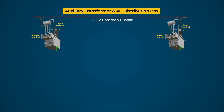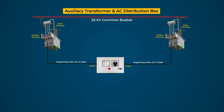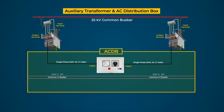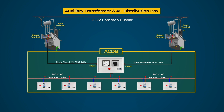The output of Auxiliary Transformers are connected with double-pole switch fuse units of appropriate rating to the ACDB, in such a manner that only one supply is fed to the copper bus bar of the ACDB through a changeover switch. This supply is further extended from the AC bus bar to both the battery chargers.